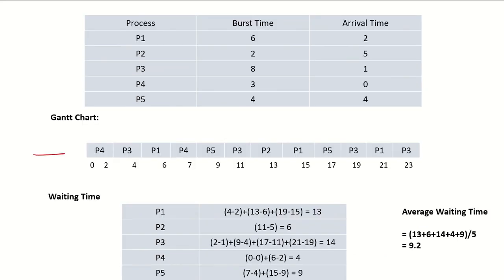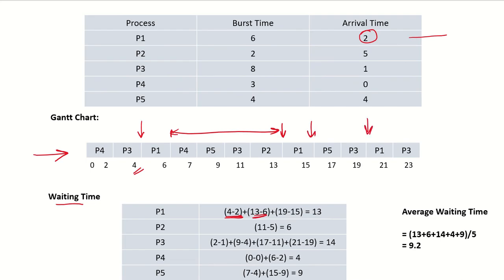Looking at the Gantt chart, this is how the processes ran over the time units. For waiting time: P1 arrived at time two but was first given the processor at time four — a wait of two. Then it waited from time six to thirteen, and from fifteen to nineteen. The total wait time for P1 is thirteen.